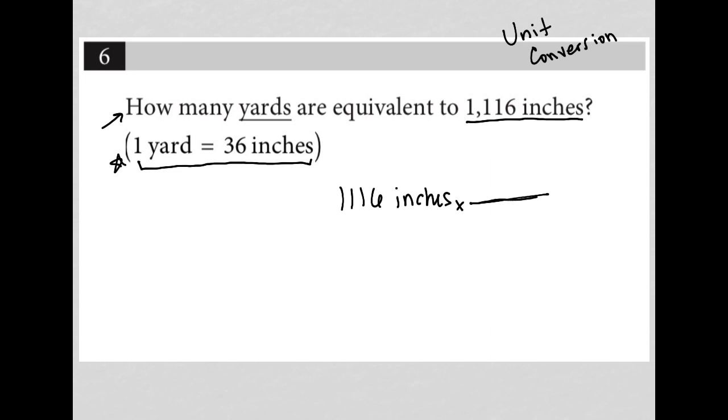This is why the unit is so important. I want the unit inches to cancel out, so that means this 36 inches should go in the denominator so they can cancel out diagonally. That way, one yard—the unit I want to introduce—goes in the numerator.